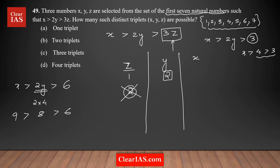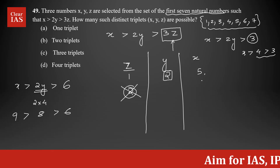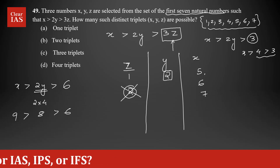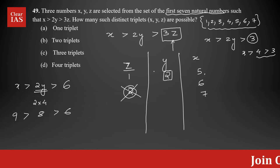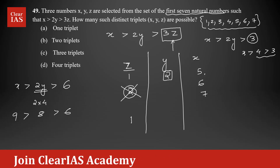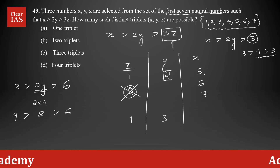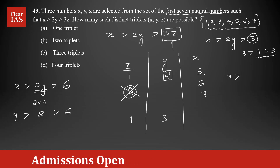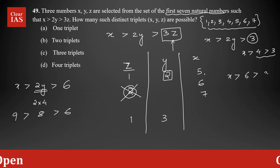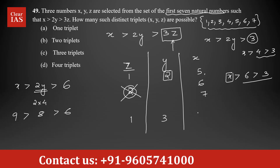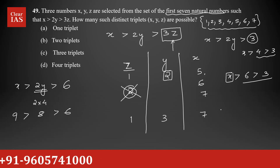With y = 2, x must be greater than 4, so x can be 5, 6, or 7. That gives us three triplets: (1,2,5), (1,2,6), and (1,2,7). Next, let's try y = 3: 2y = 6, so x must be greater than 6, meaning x = 7 is the only possible value.